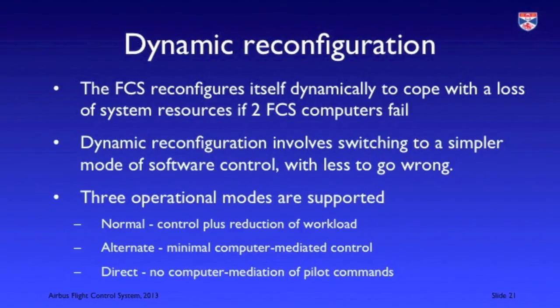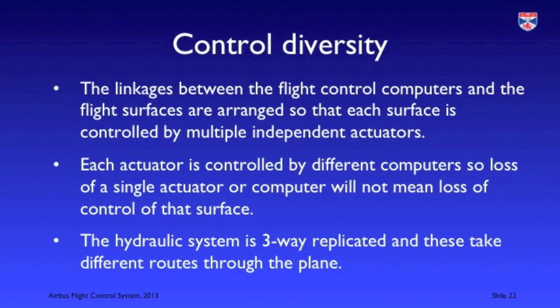The flight control system can be reconfigured dynamically to cope with the loss of system resources. If things start to go wrong, the system can change itself to become a simpler system which makes fewer demands on the hardware and requires less computational capability. As well as redundancy within the flight control system, the sensors, actuators and connections are also duplicated, so that the system can cope with the loss of a sensor in flight because a backup system will provide the same information.